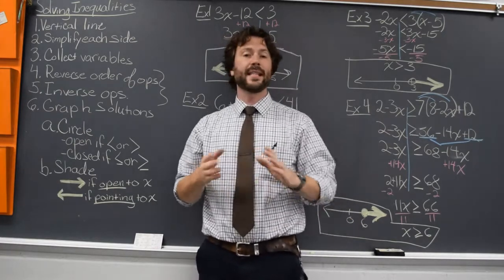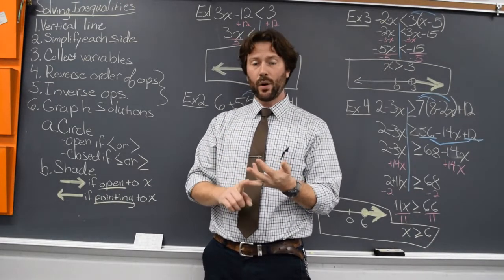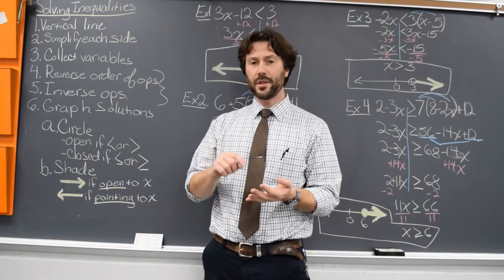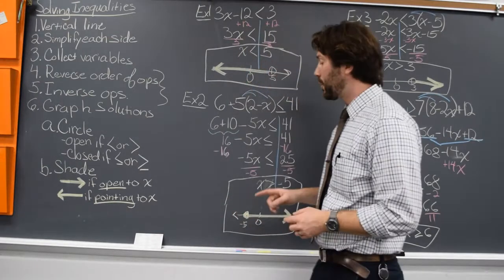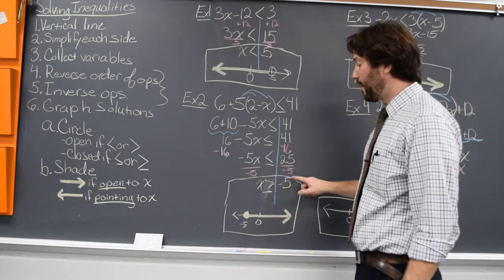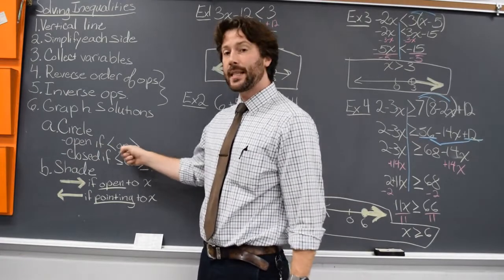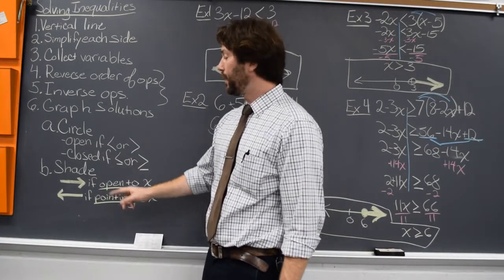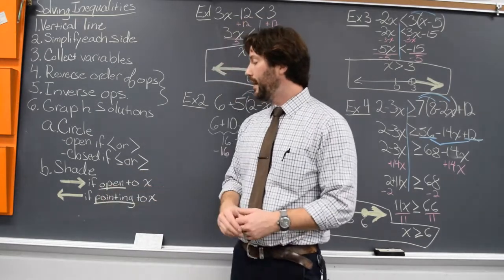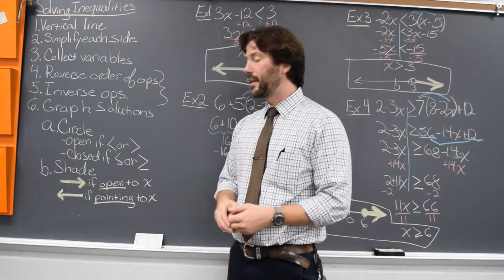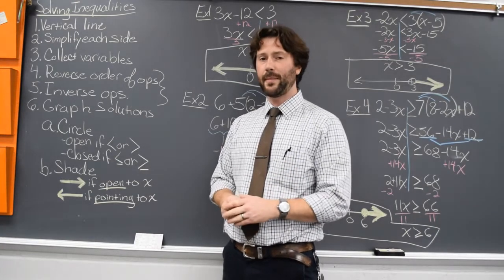Solving an inequality is the exact same way that you would solve an equation: vertical line, simplify each side, get all your variables on one side, and then reverse order of operations and inverse operations to get that variable by itself. Just keep in mind, if you multiply or divide both sides by a negative, you have to reverse that inequality. When you go to graph, if it's just less than or just greater than, use an open circle. If it's less than or equal to, or greater than or equal to, use a closed circle. Shade to the right if the inequality opens to x; shade to the left if the inequality points to x. If you have any questions, make sure you contact me and get those questions answered.